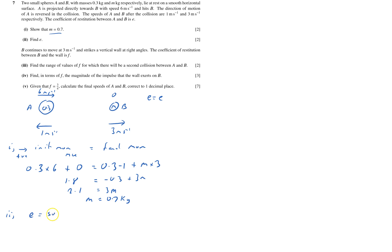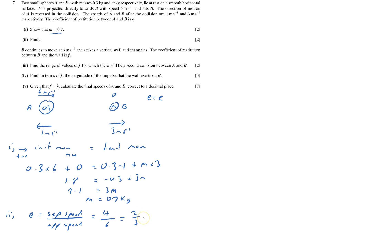For part two I need to find E. The coefficient of restitution equals separation speed over approach speed. The balls move apart at 4 m/s and approach at 6 m/s, so E equals 4 over 6, which is two thirds.